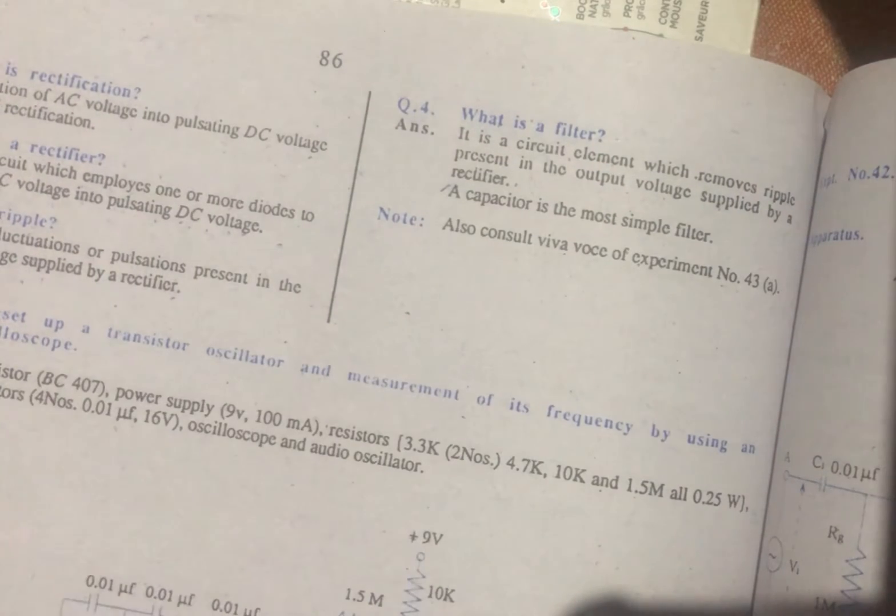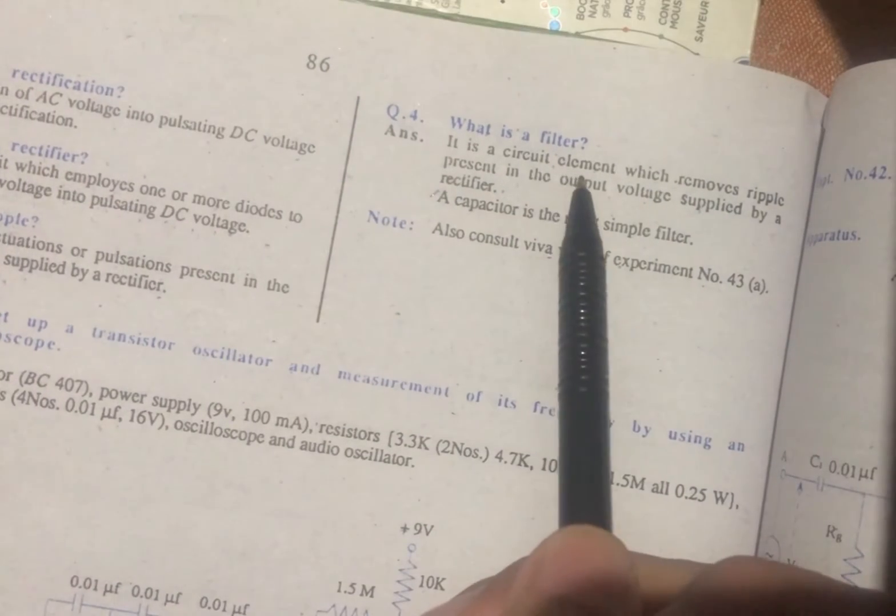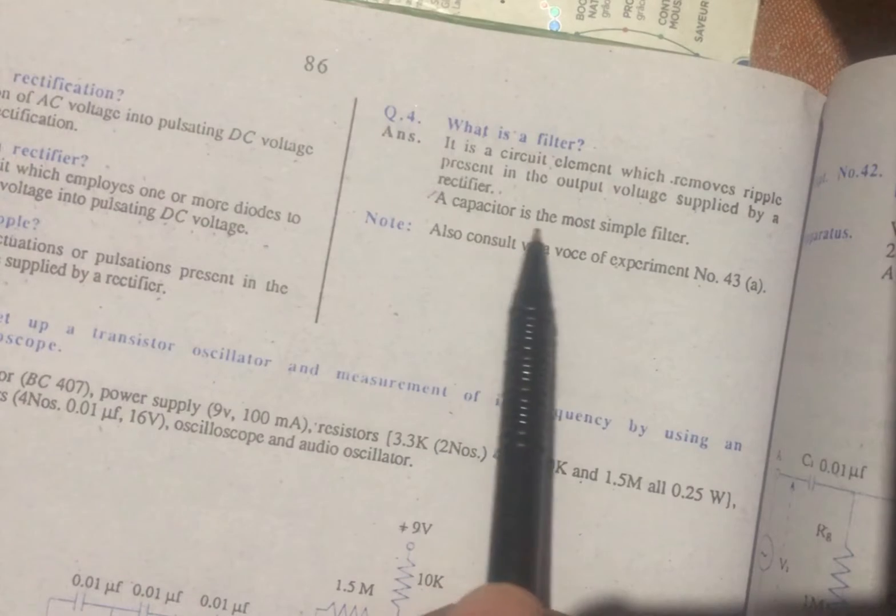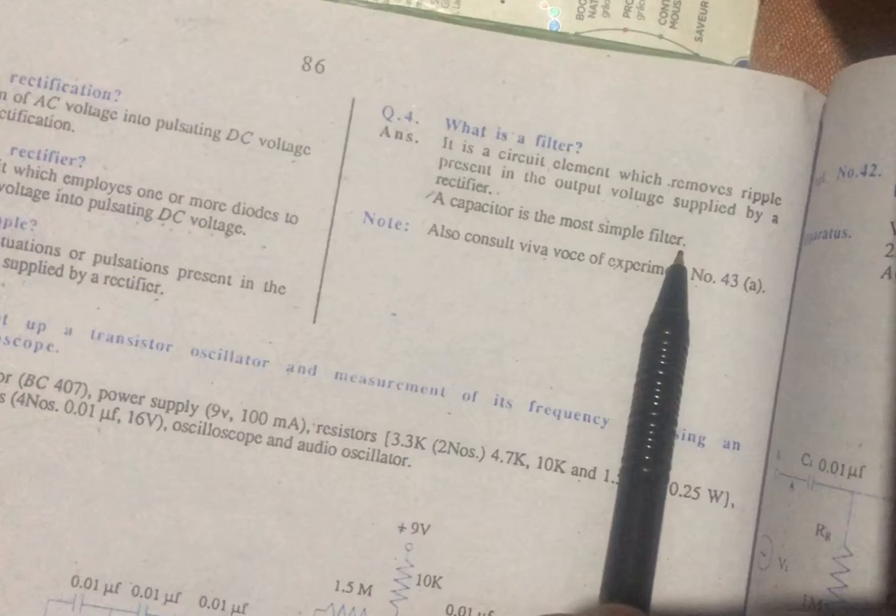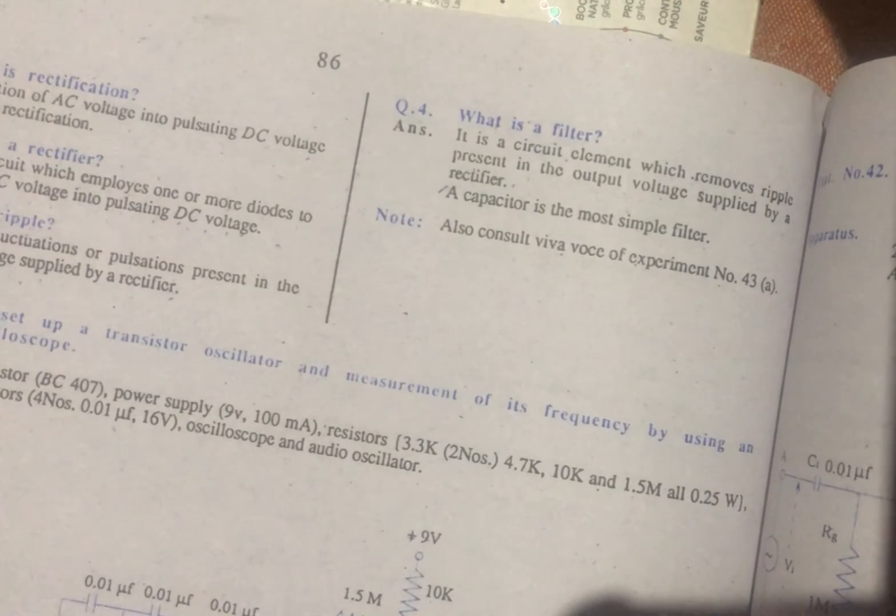To remove the pulsing, the circuit element is the filter. Basically it is a capacitor. The capacitor is the most simple filter.